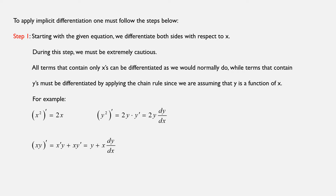To apply implicit differentiation, one must follow the steps below. In step one, starting with a given equation, we differentiate both sides with respect to x. Here is the tricky part: during this step, we must be extremely cautious. All terms that contain only x's can be differentiated as we would normally do, while terms that contain y's must be differentiated by applying the chain rule, since we are assuming that y is a function of x.